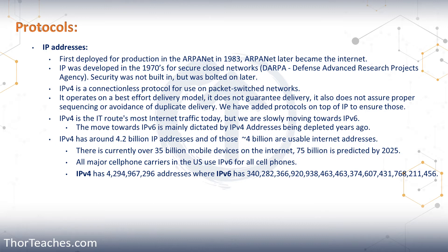IPv4 really only has 4 billion usable addresses. When the Internet was designed, they thought maybe in every large city there might be one computer — so 4 billion seemed like an insane amount. Last time this was recorded there were about 8 billion devices on the Internet; now we're close to 30 billion, and we expect about 75 billion devices by 2025. Any smartphone in the United States uses IPv6 — you don't know, you don't care — but that saves a ton of IPv4 addresses.